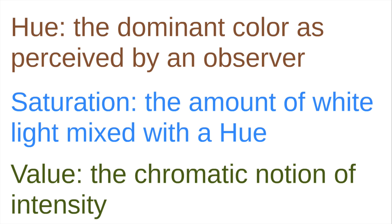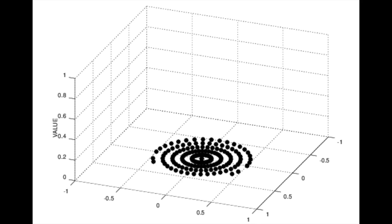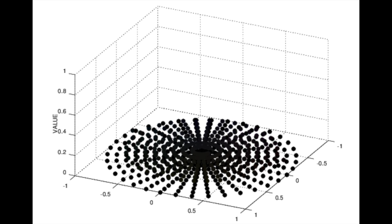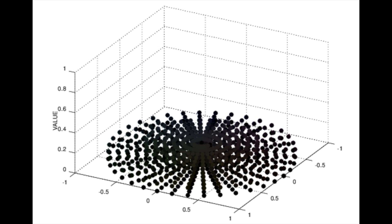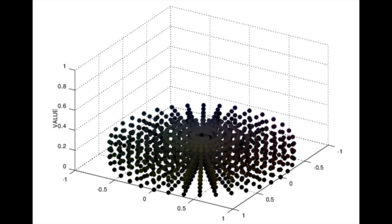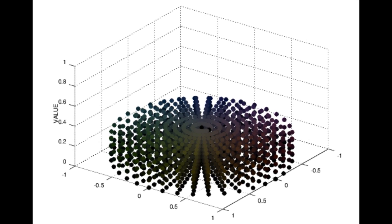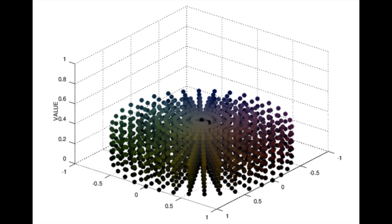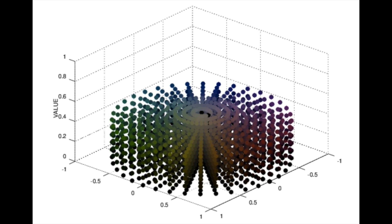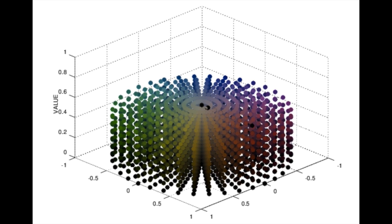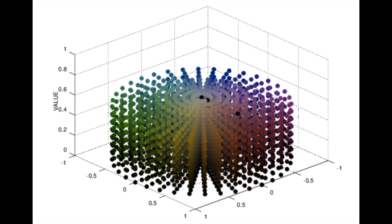We change these three parameters in order to create different combinations of colors. Here we provide an example — a graph where I created all the possibilities of different colors, considering the value, the saturation, and the hue. We can perceive that, as said previously, when the value is low, all the colors are similar to black. And as the value increases, we have the colors themselves.